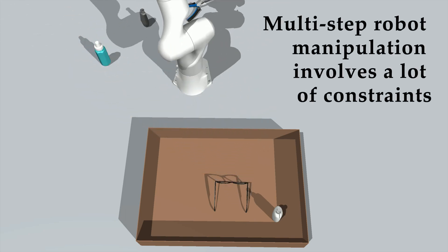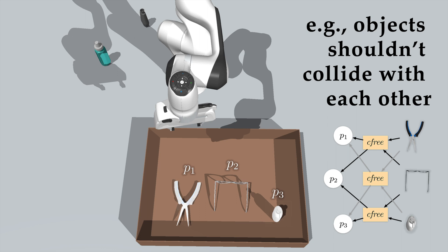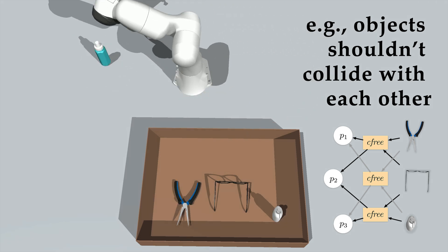Multi-step robot manipulation involves a lot of constraints. For example, the objects shouldn't collide with each other when placed inside this container.